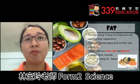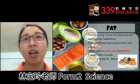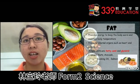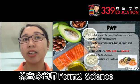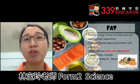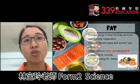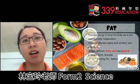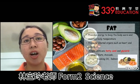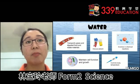Fat provides energy to keep the body warm and maintain body temperature. Fat also protects internal organs such as heart and kidney. The simple units of fats are fatty acids and glycerol. Examples of food containing fats are nuts, avocado, cooking oil and salmon.